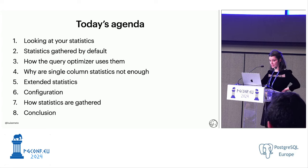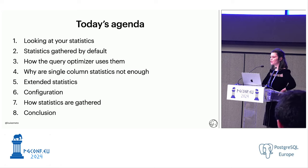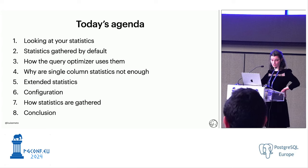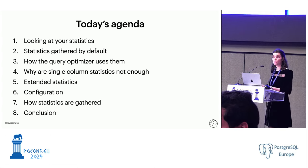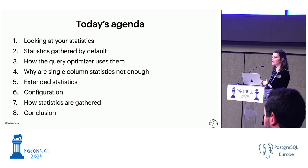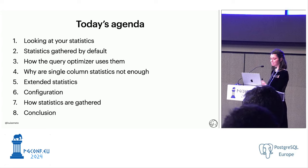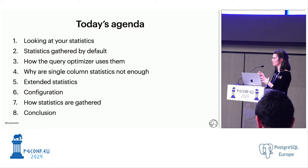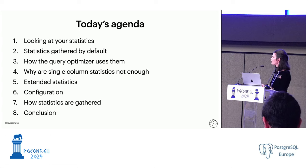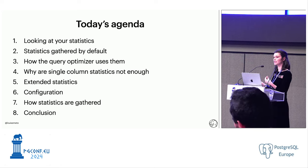So what are we going to talk about today? We're going to talk about Postgres statistics. The first thing we'll cover is how you can, as a user, look at the statistics gathered by Postgres on your tables. Then we'll talk about which statistics are gathered by default. To understand why Postgres gathers them, we'll talk about the query optimizer and how it uses statistics to compute costs. We'll go into why that's not enough — why sometimes you get wrong query plans — and we'll talk about extended statistics configuration, the query optimizer internals, and how statistics are gathered.